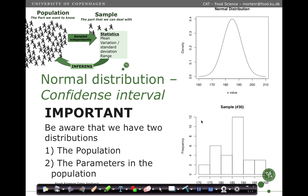One thing to be very clear about when we talk about a confidence interval is that we have two distributions: the distribution which reflects the population, and the distribution which reflects the parameters estimated from the population. So the mean value has a different normal distribution than the population distribution itself.